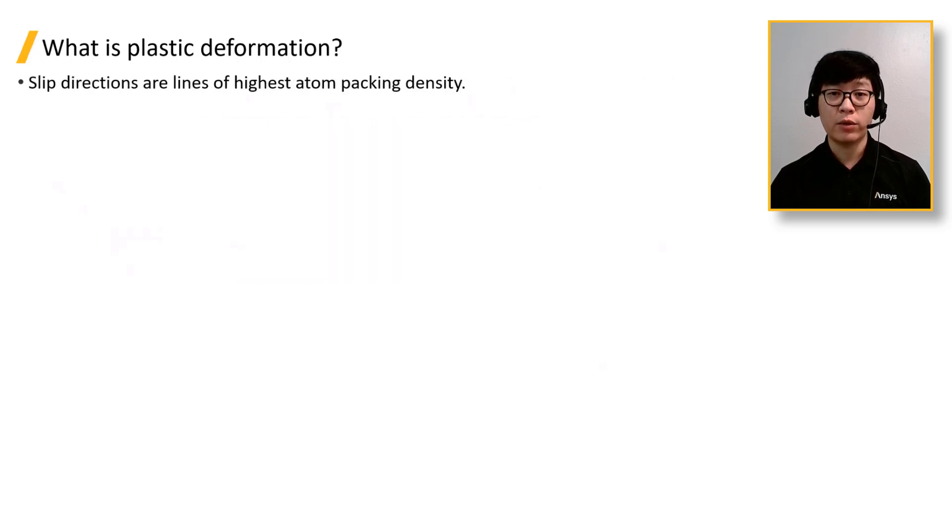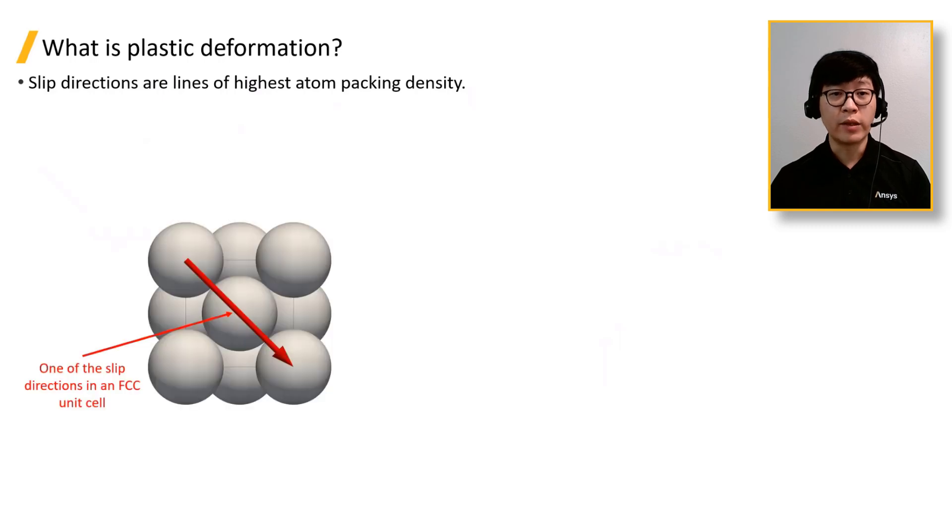Slip directions depend on the crystal structure and the orientation of each grain, and are lines of the highest atomic packing density. In this figure here, we show an example of one of the slip directions in an FCC unit cell.